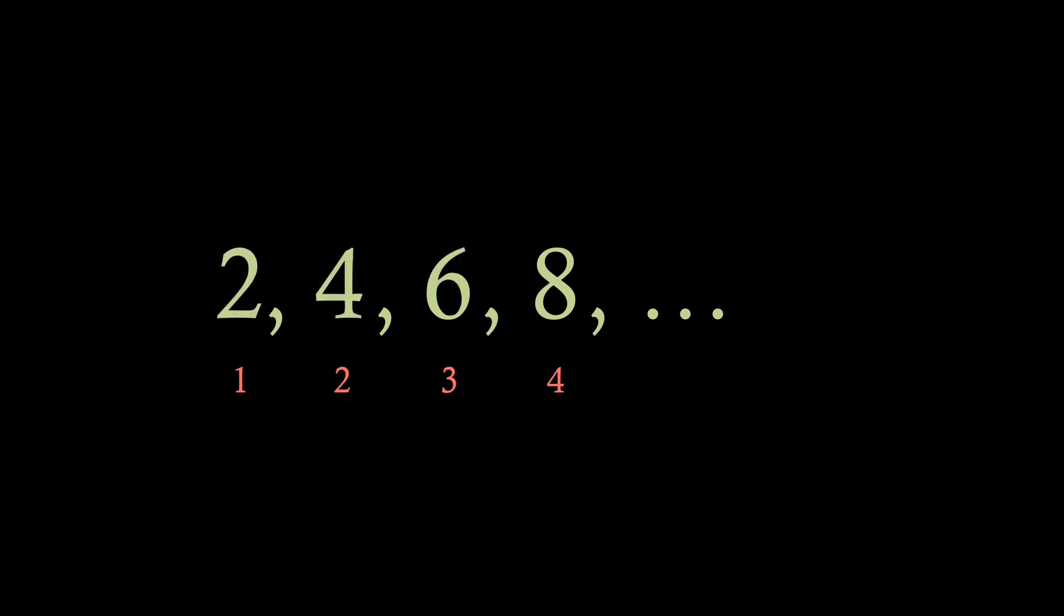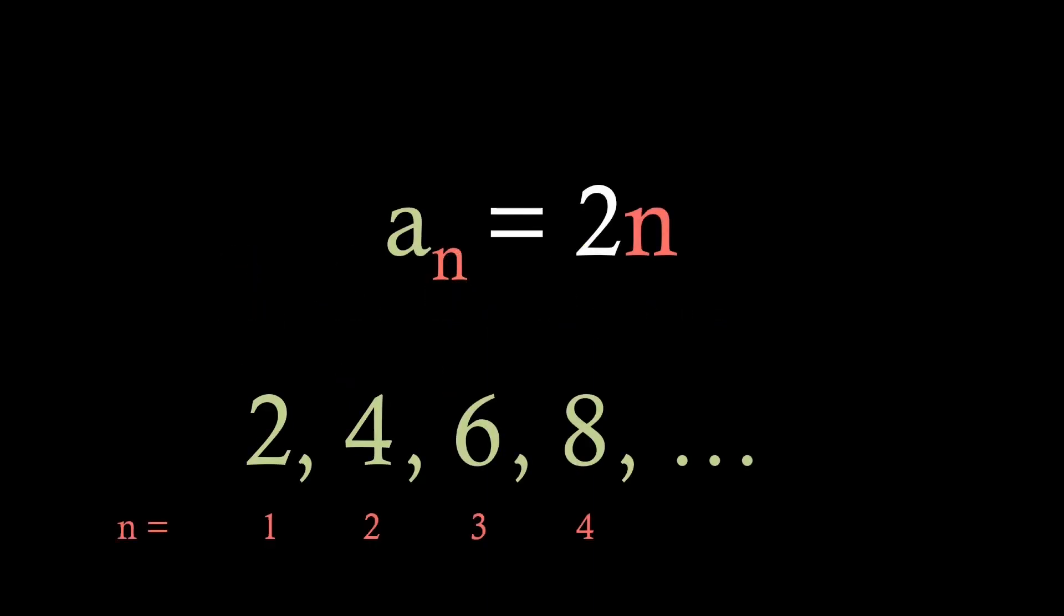Sometimes the value of the entry relates to the position in the list. For example, 2, 4, 6, and 8 where we can see that each entry is just double its position. Here we can write the nth term formula, i.e. the value at an nth position, as 2n. Here we've used the notation that a is our arbitrary sequence and n denotes the position.